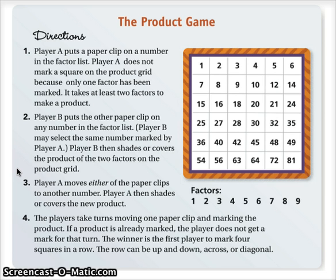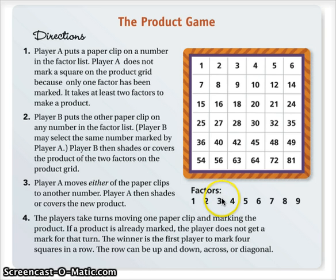Step two: Player B puts the other paperclip on any number in the factor list, and Player B may select the same number marked by Player A. So you could have two paperclips on the number three because three times three is nine. Player B then shades or covers the product of the two factors on the product grid. If both paperclips are on the three, they would do three times three, and Player B would mark nine with his or her color.